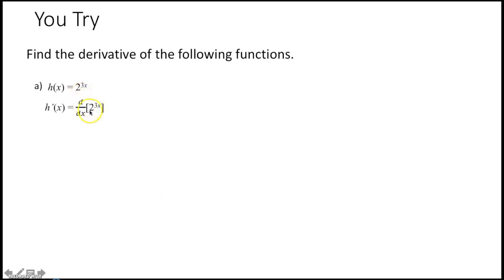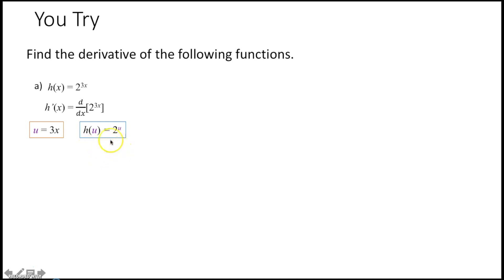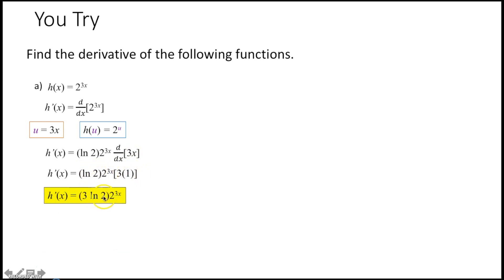You try: derivative of 2^(3x). When taking the derivative of a number raised to a power with the independent variable, use ln of the base times the same thing: ln(2) times 2^(3x). But since the exponent is 3x rather than just x, we need the chain rule. Let u = 3x, outer function = 2^u. Derivative is ln(2) times 2^(3x) times the derivative of 3x, which is 3. Final answer: 3 times ln(2) times 2^(3x). You could simplify 3·ln(2) to ln(8), but that's as far as it goes.